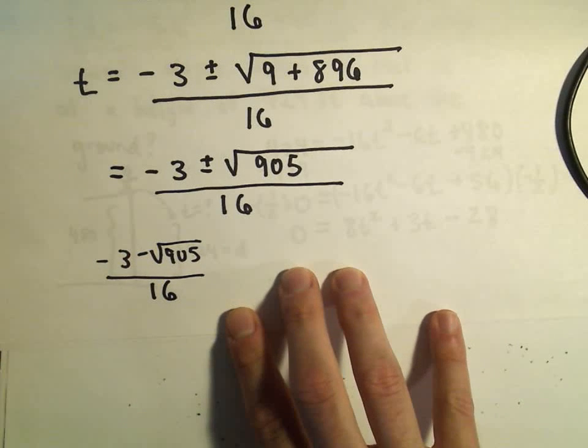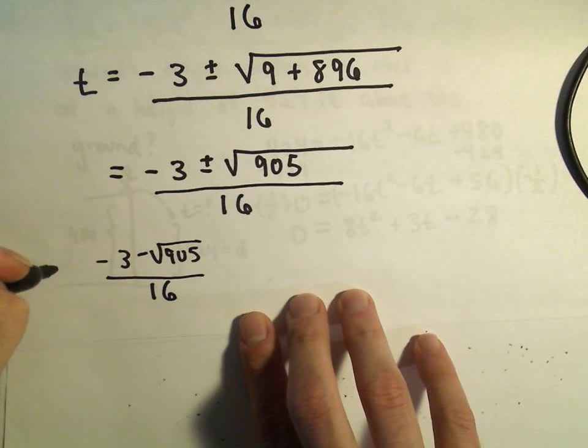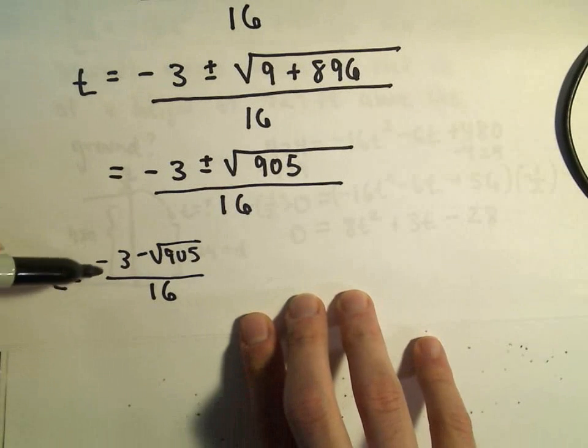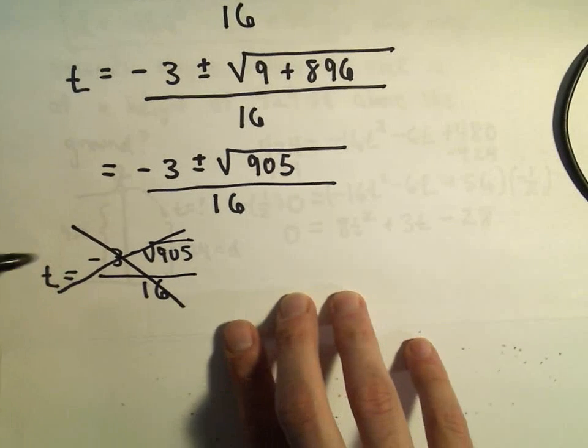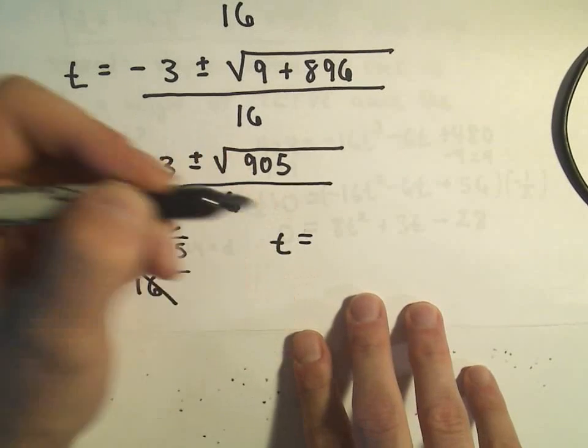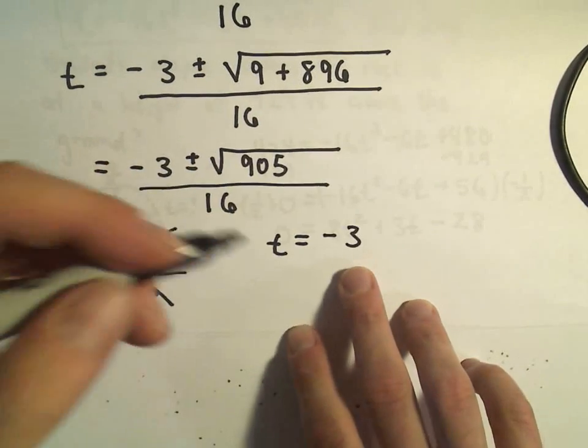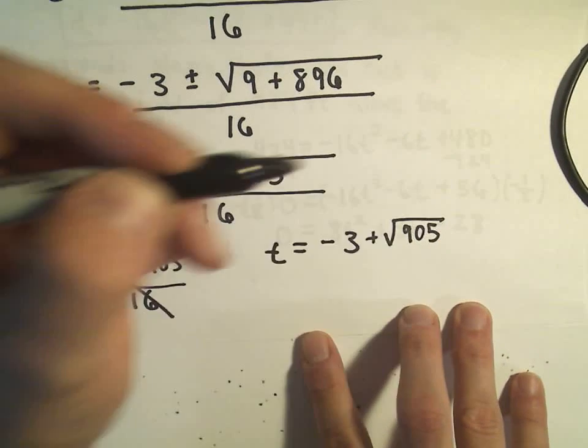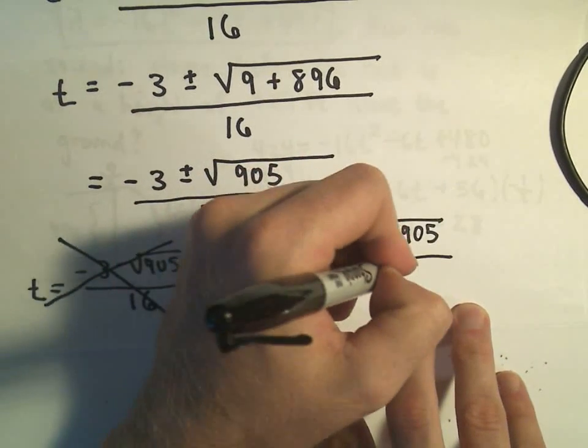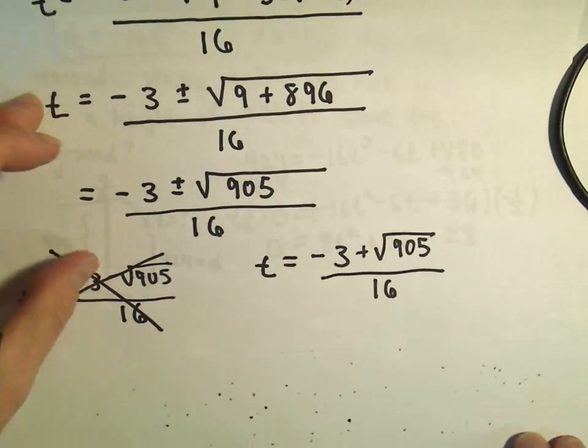One of the solutions will be negative 3 minus square root of 905 over 16, but notice here the numerator's going to be negative, the denominator's positive, although that's a solution to the quadratic, we don't want our times to be negative. So the solution to our equation is going to be t equals negative 3, we'll use positive square root of 905, we'll divide all that by 16.